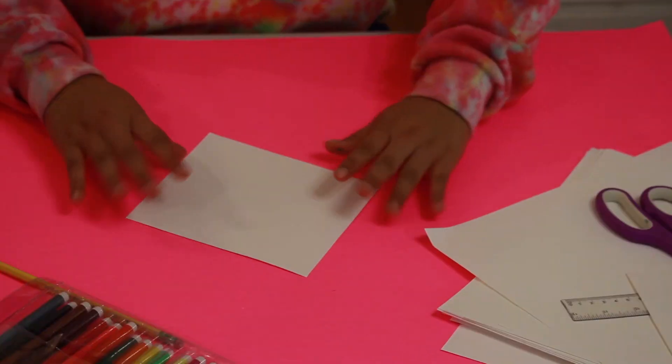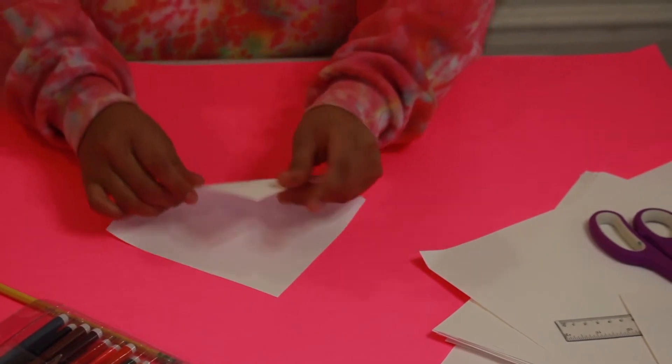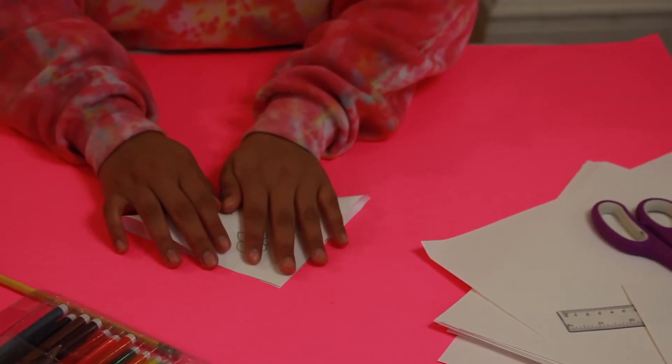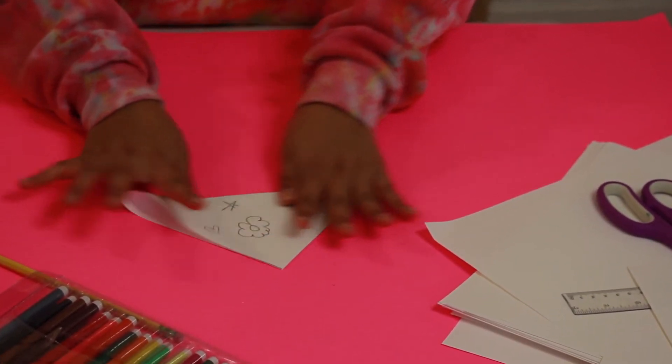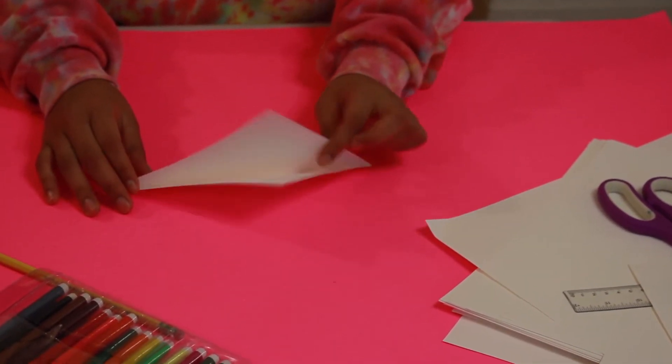Alright, now that I'm all done with my design let's get started making our actual bookmark. So hold your paper like a diamond and fold the bottom to the top making a triangle and make sure it's a cut clean crease.